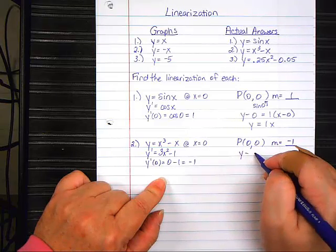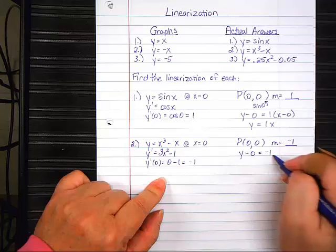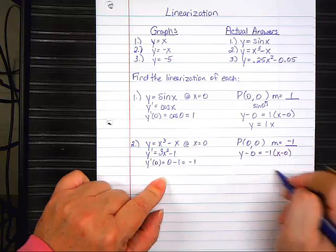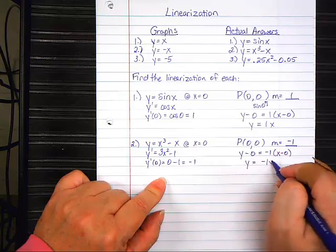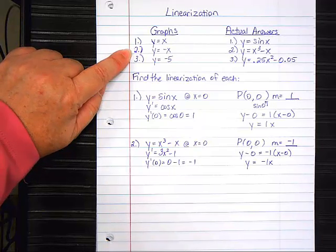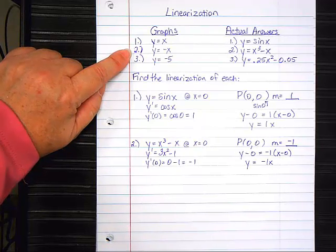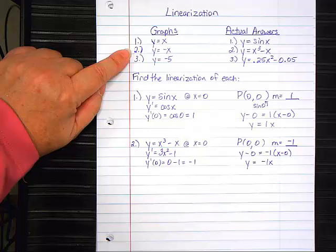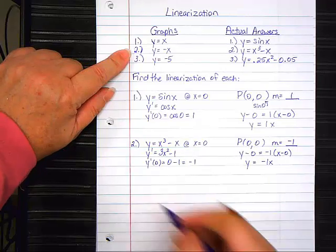So, then write the equation. Y minus zero equals negative one, X minus zero. Y equals negative one X. That's what I got for number two. Easy stuff. And it's going to stay about this easy, I promise you.